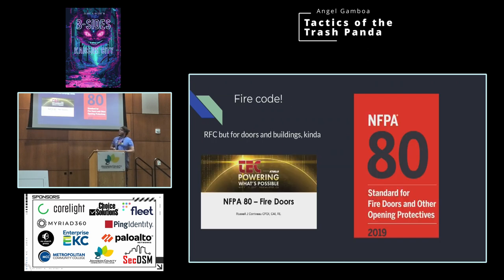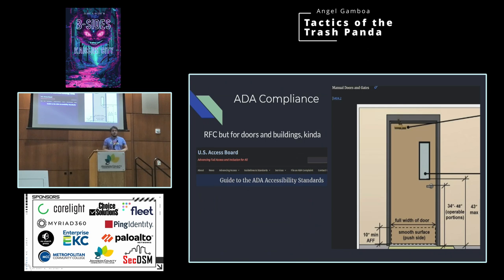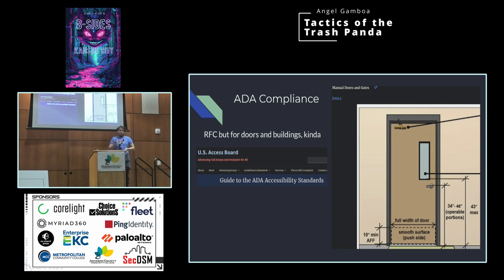One of the things you can read is fire code. There's the NFPA-80, the standard for fire doors and other opening protectives. These will document how certain doors should be within certain structures — basically like an RFC for doors and buildings. Same with ADA compliance. You can go online and find the ADA accessibility standards, and this is where a lot of tradecraft comes from for under-the-door tooling. You'll see this margin here — 34 to 48 inches — is where you can grab that operable handle.